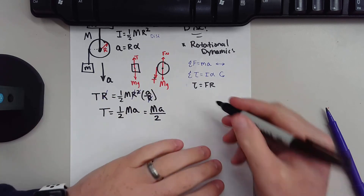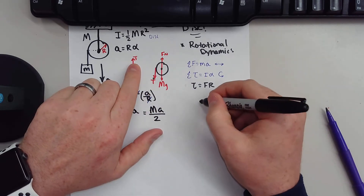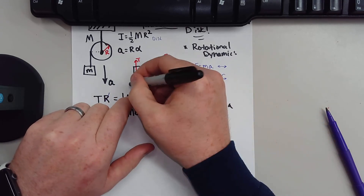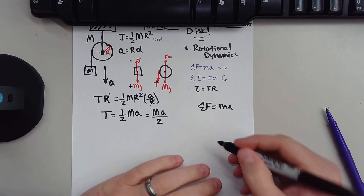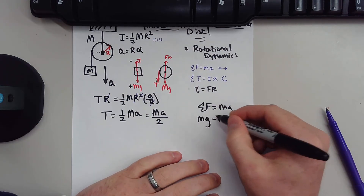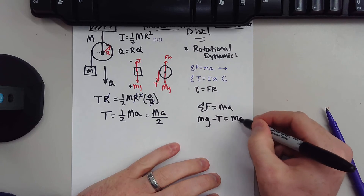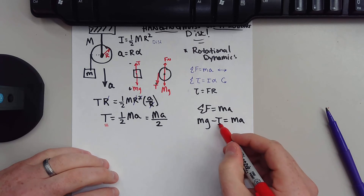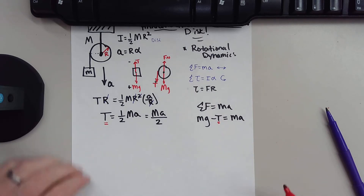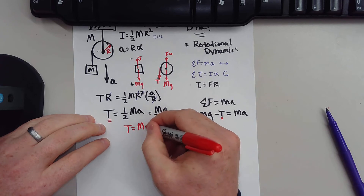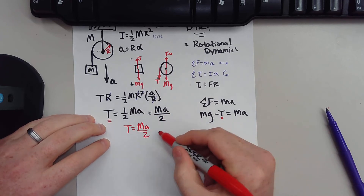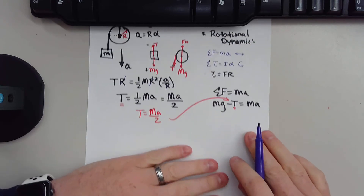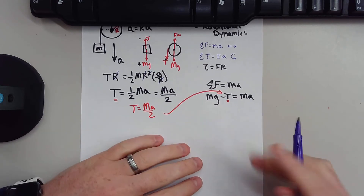Now let's look at the hanging block. Applying Newton's second law — F equals MA — the system is going down, so mg is positive and tension is negative. That gives us: little m times G minus T equals little m times A. We have the variable T here, and we know T equals big M times A over 2, so we can plug that in to solve for the acceleration of our system.